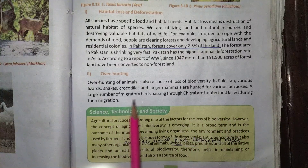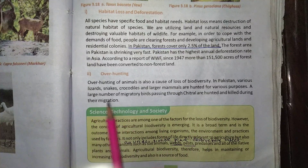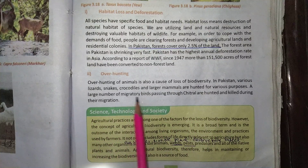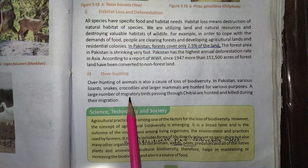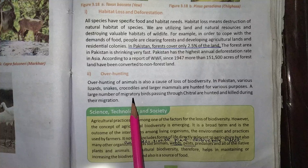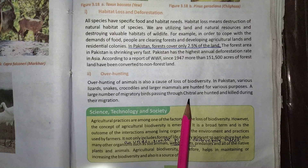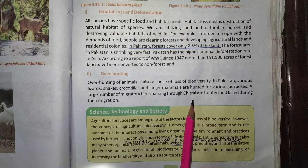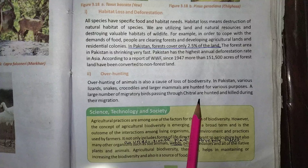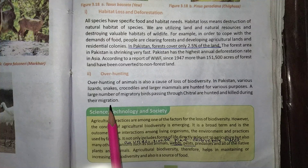A large number of migratory birds passing through Chitral are hunted. When migratory birds like the Talar or Hobara Bustard are walking through their migration and land in Chitral for breeding, hunters are already there and hunt them. The birds are hunted and killed during their migration.